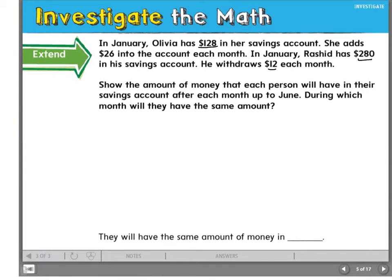There's a lot going on in this question. We're going to have to organize our answers. I know that I'm going to have to find a pattern for Olivia's bank account and a pattern for Rashid's bank account. I know that I'm going to have to find how much money they have each month from January to June. I'm going to set up a table to organize my work.